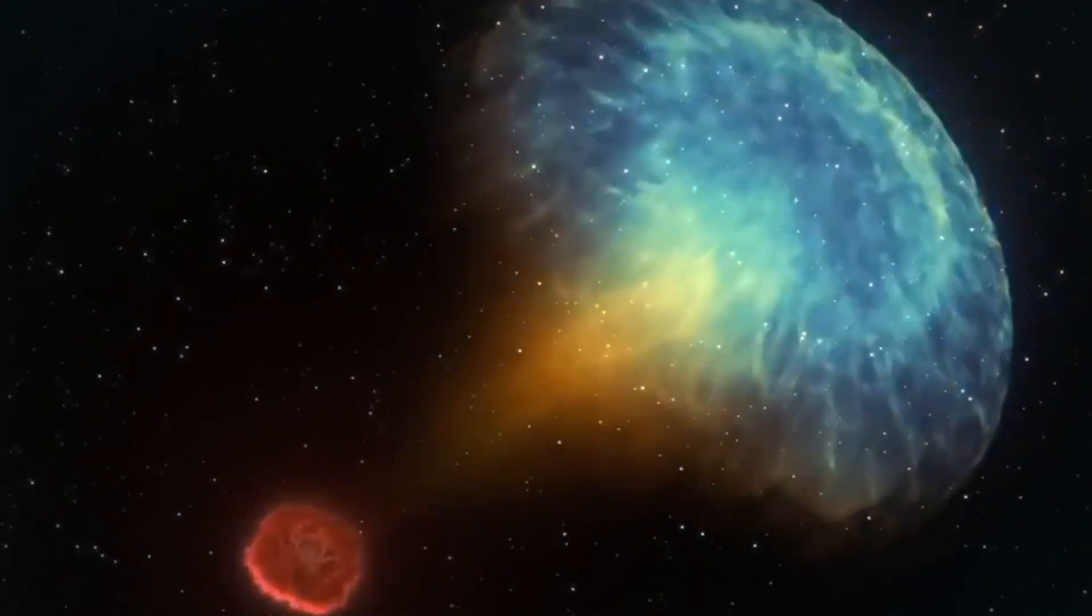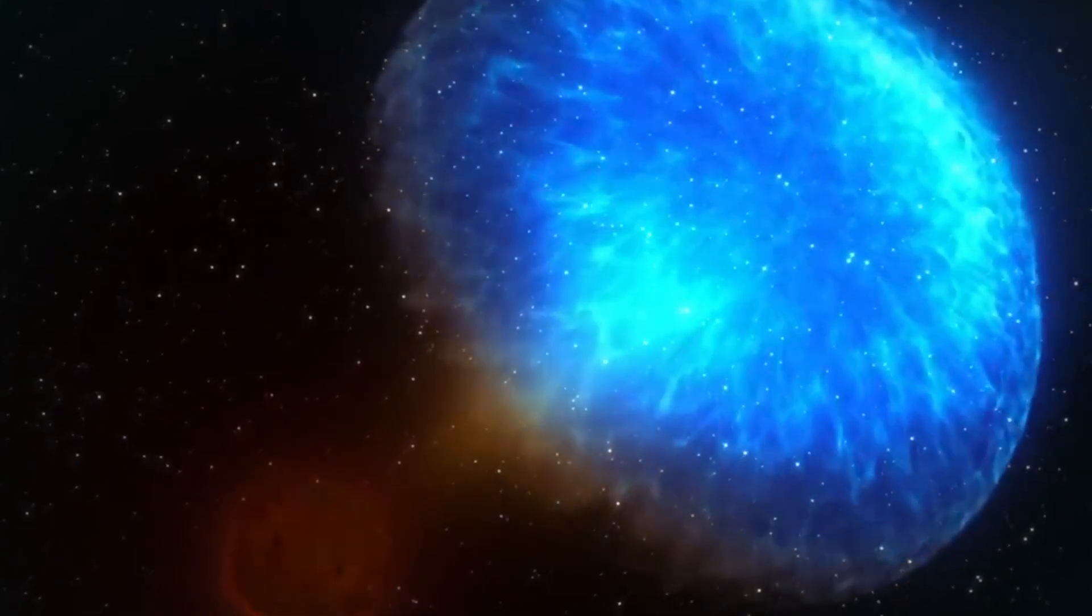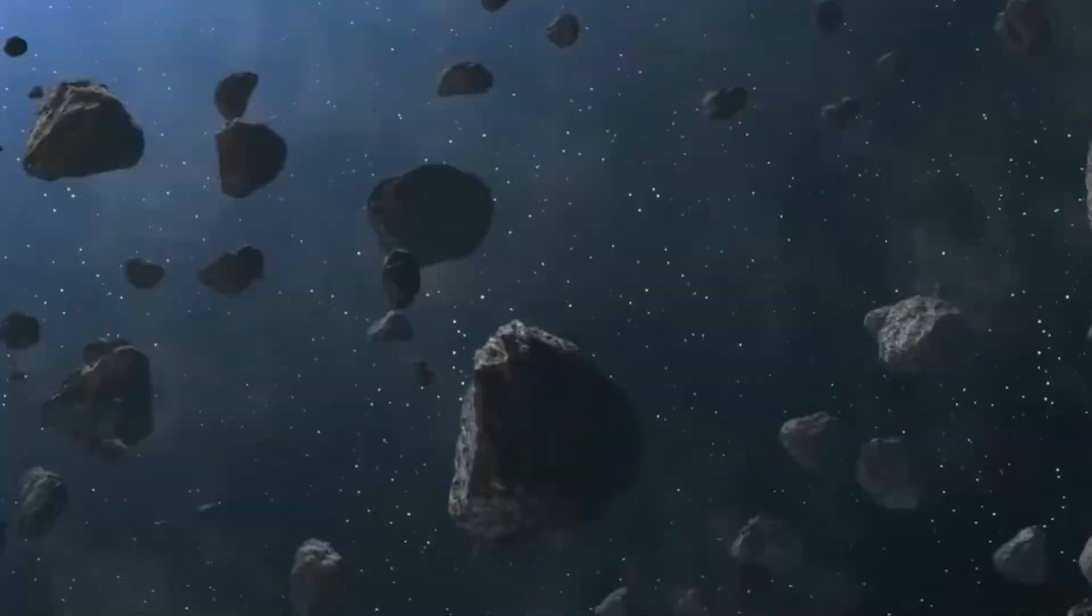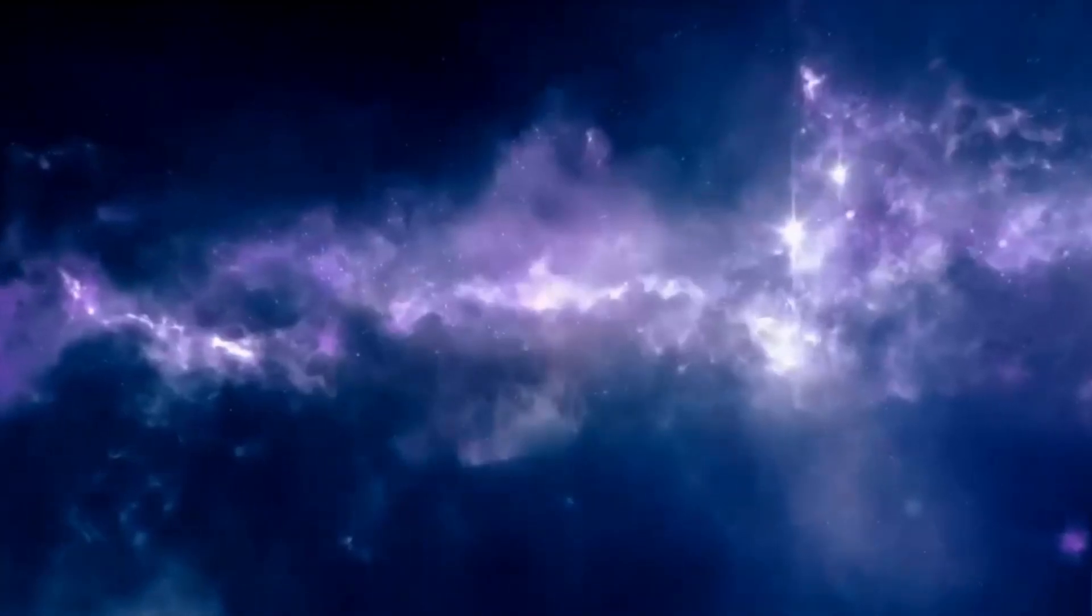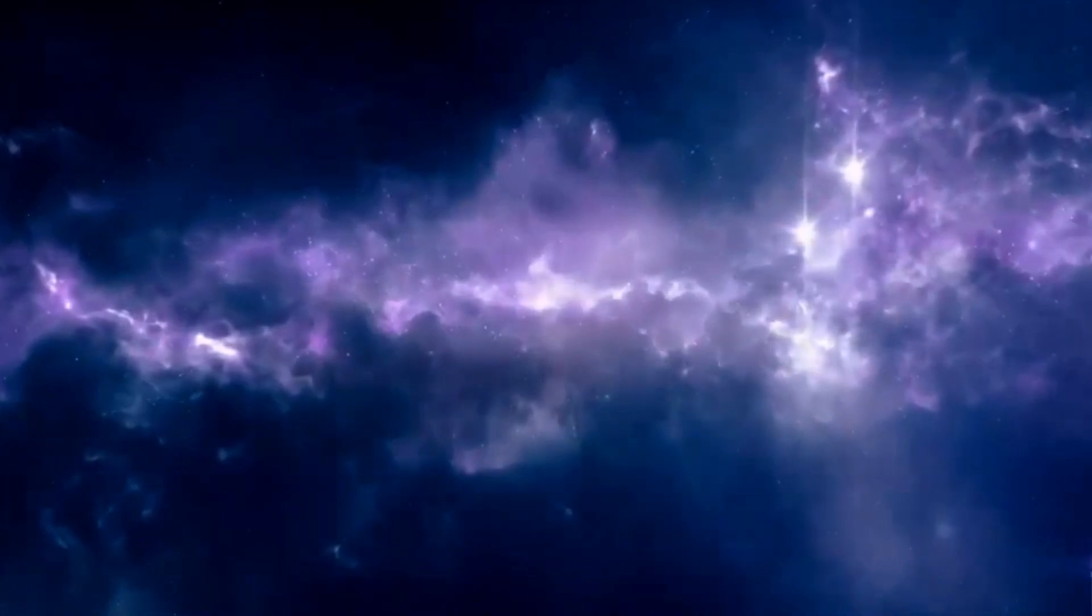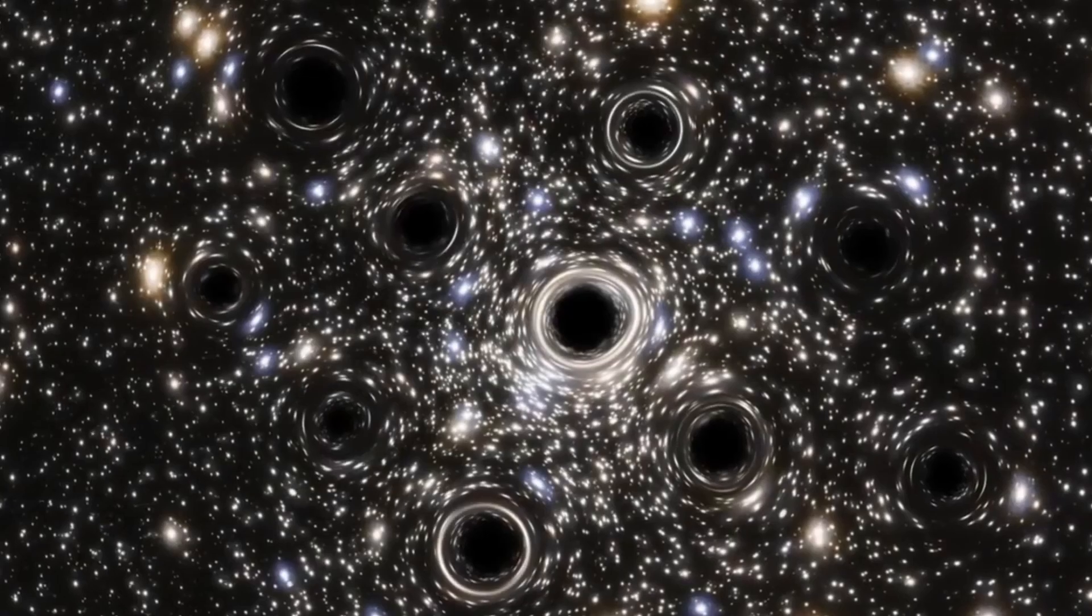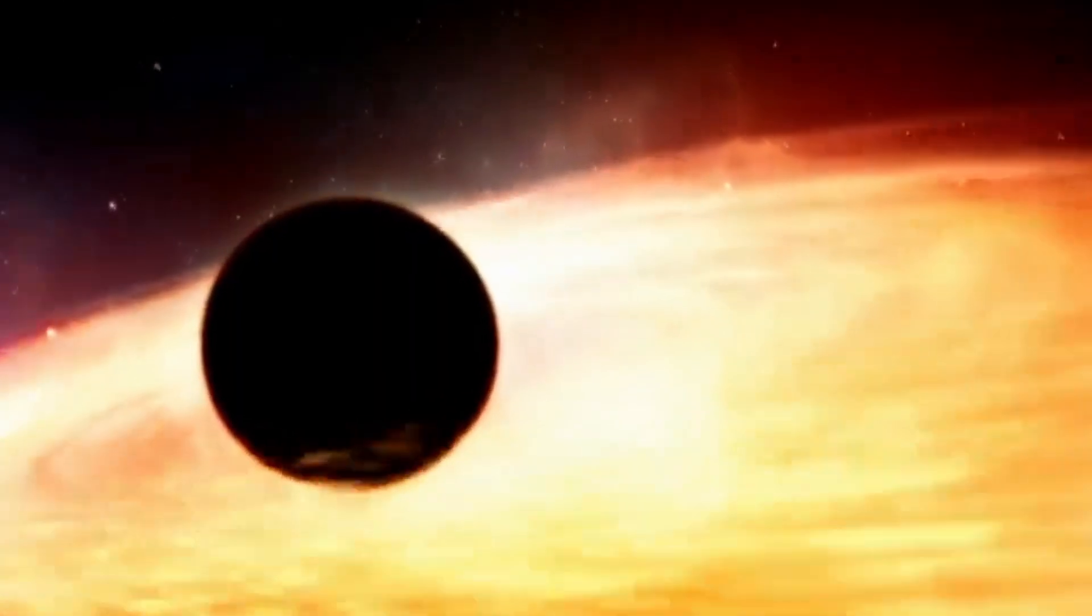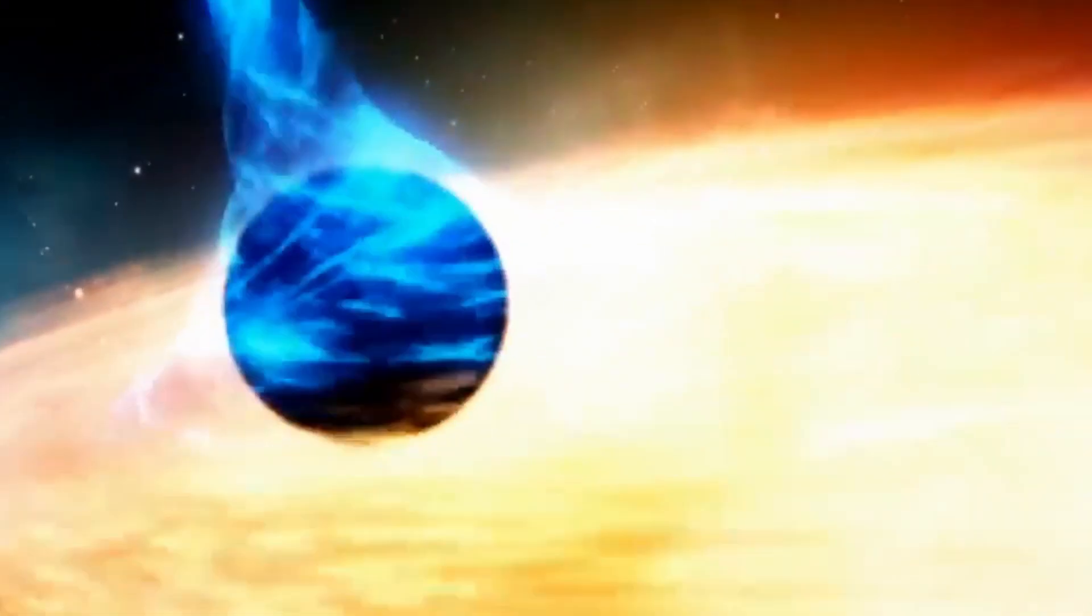Scientists think that stellar black holes like Gaia BH3 form when metal-poor stars collapse. Yes, the star that formed Gaia BH3 is metal-poor, meaning it had fewer heavier elements. Metal-poor stars are expected to lose more mass during their lifetimes compared to stars with more metals. Scientists have questioned whether such stars can retain enough mass to create black holes, and Gaia BH3 is the first evidence suggesting that metal-poor stars can indeed give rise to black holes.